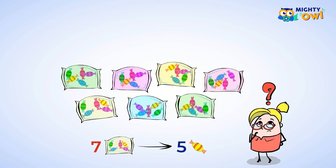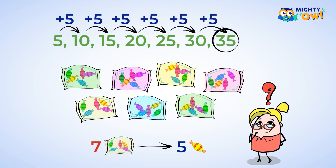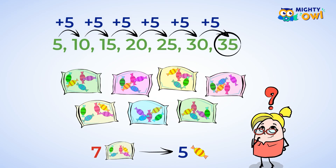Another method you could use is skip counting by five. Five plus five gives you ten. Add another five to ten equals fifteen. Add another five to get twenty, and you keep going to get twenty-five, then thirty, and finally thirty-five. That's a lot of work.